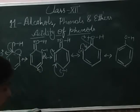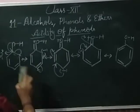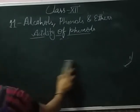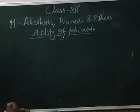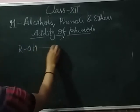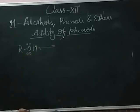The acidity of phenol is well explained by the resonating structure. One question arises: why is phenol more acidic than alcohol, whereas both have the hydroxyl group? This is understood by the help of ionization of alcohol and phenol.